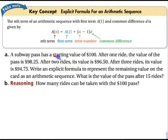So we've got this whole thing here we've already talked about. Subway pass has a starting value of $100. After one ride, the value of the pass is $98.25. So we lose $1.75. After two rides, it's now $96.50. So that's another minus $1.75. After three, it's $94.75. So this is d. This is a one.